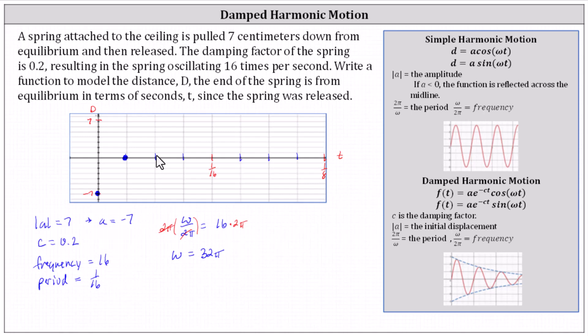But because we have damped harmonic motion, the max will not be all the way up to positive 7. It'll be a little bit below.